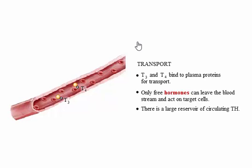There is a large circulating reservoir of thyroid hormones. Thyroid hormones have a long half-life, in part because they are bound to carrier proteins.